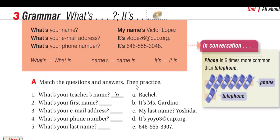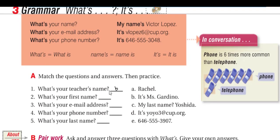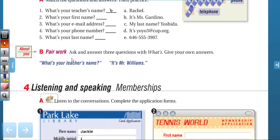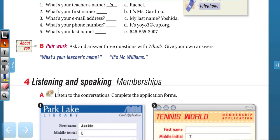Match the questions and answers, then practice. 'What's your teacher's name?' — 'It's Miss Gardino.' 'What's your first name?' — 'Rachel.' 'What's your email address?' — 'It's yojotree at cup.org.' 'What's your phone number?' — '646-555-3907.' 'What's your last name?' — 'Yoshida.' Now, pair work: ask and answer three questions with 'what's.' Give your own answer. For example: 'What's your teacher's name?' 'It's Mr. Martinez.'